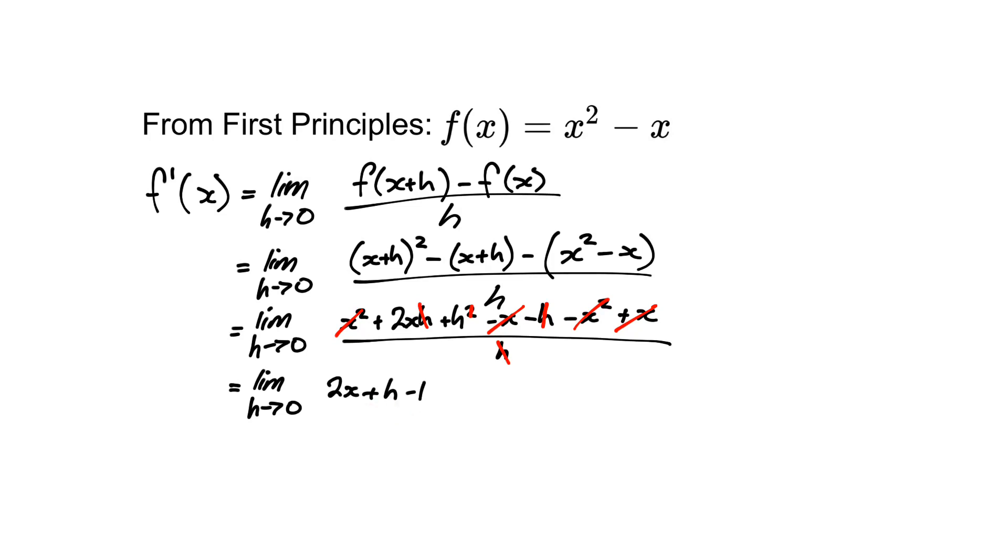So when we're looking at when h goes towards 0, this part here will go to 0, so this will just give us that 2x minus 1 is the derivative of our original function, x squared minus x.